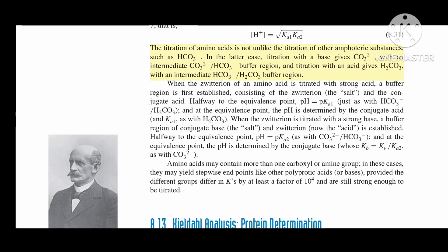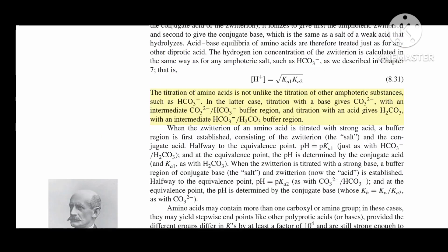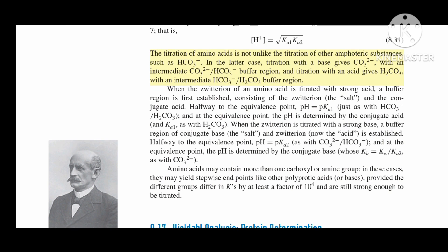The titration of amino acids is not unlike the titration of other amphoteric substances, such as HCO3-. In the latter case, titration with a base gives CO3²- with an intermediate CO3²-/HCO3- buffer region, and titration with an acid gives H2CO3 with an intermediate HCO3-/H2CO3 buffer region.